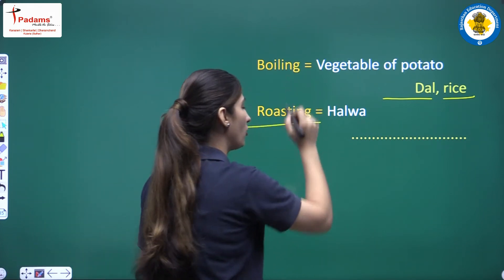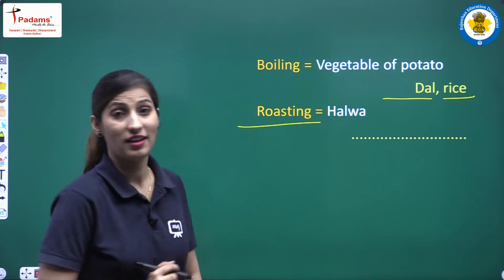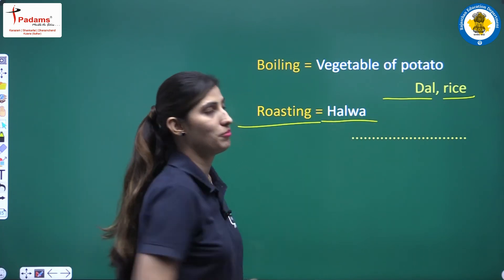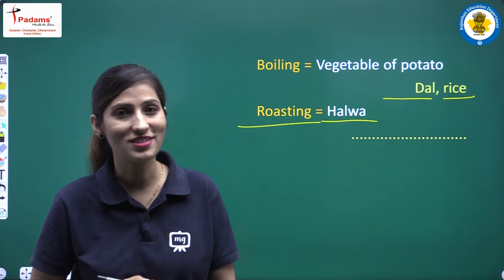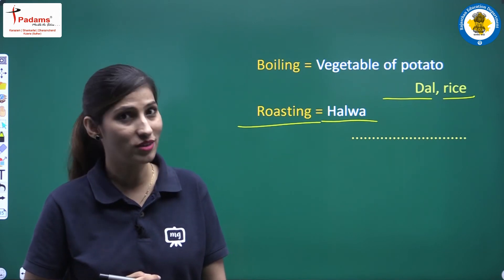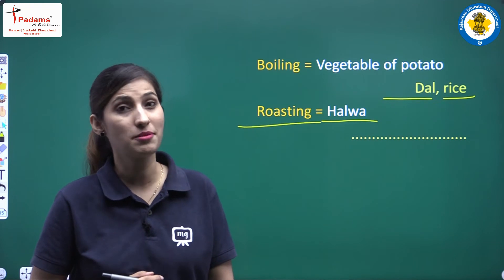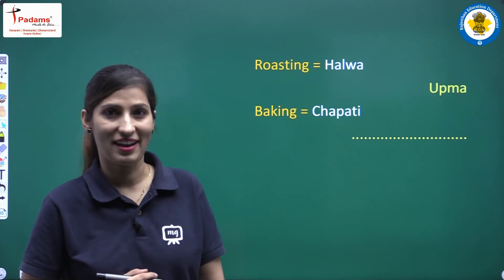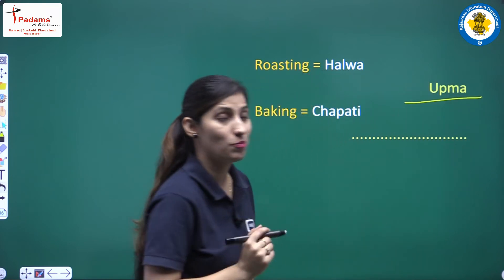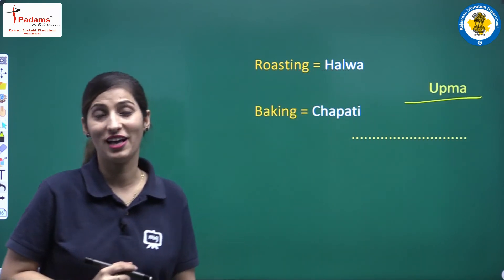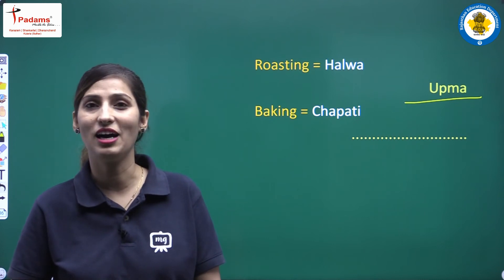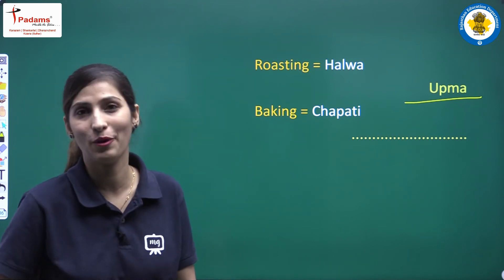Next one is roasting. The example is halwa — whenever we make halwa, which method do we use? We use roasting. Can you tell me some more examples for roasting? The answer is upma — when we make upma, we also roast it — bhuntate hai. Roasting means bhunna.